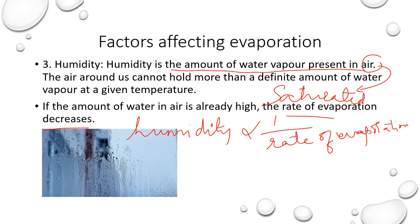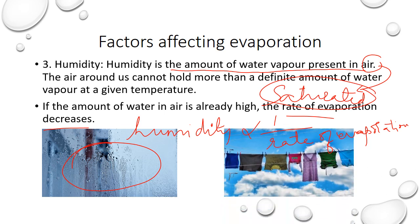When humidity is high, water vapor gets condensed if the temperature becomes cooler. But at normal conditions, if humidity is high, the air has too much water vapor and cannot take up more vapors. In such cases, drying of clothes is not preferred. For example, on a rainy day, since it is raining, there is more humidity and more moisture in the atmosphere, so the clothes do not dry faster because the rate of evaporation is less.